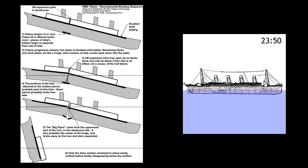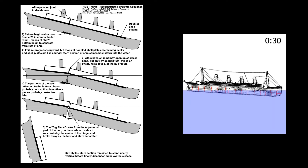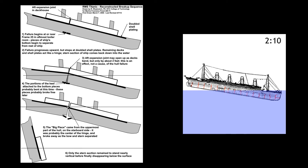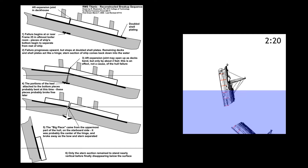Larger ferrite grains and pearlite colonies are known to provide lower fracture toughness at low temperatures. Furthermore, manganese sulfide particles are known to act as crack initiators.